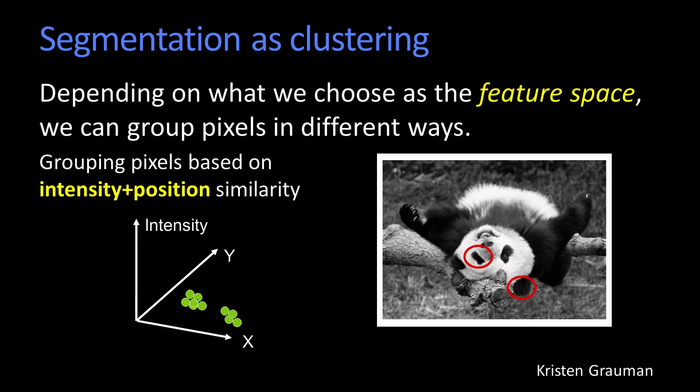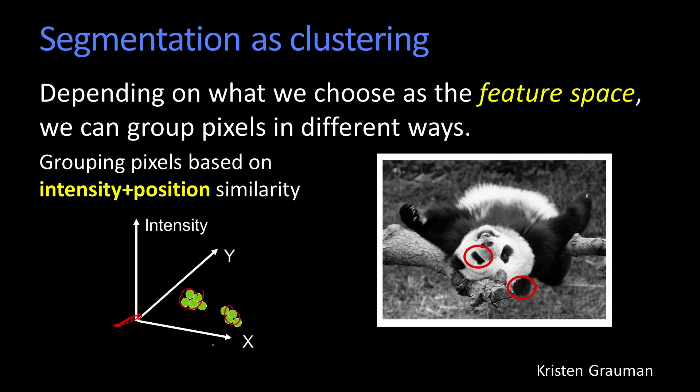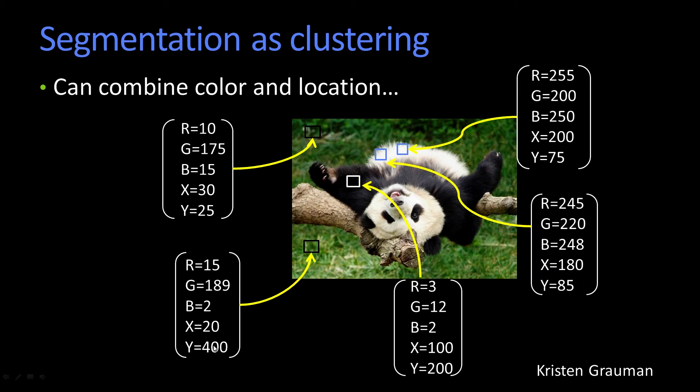Here we have the black pixels. Together they're low in intensity but separated in different areas in x and y. And so you would get two different clusters.